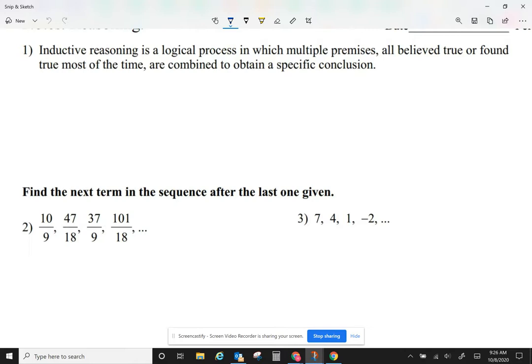Inductive reasoning is a logical process in which multiple premises, all believed true or found true most of the time, are combined to obtain a specific conclusion. In English, this means I'm just going to look for patterns. I'm going to assume that things keep happening the same way. I'm going to see what has happened in the past, and based on the past, I'm going to predict the future. There's patterns.